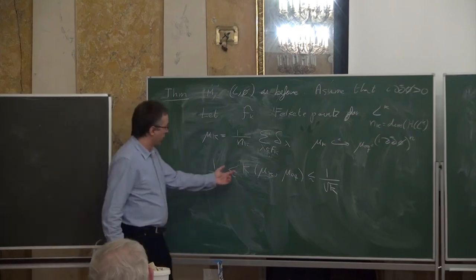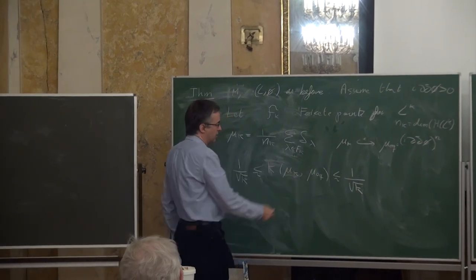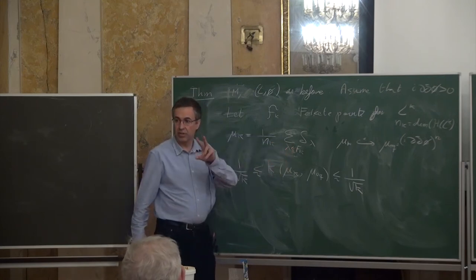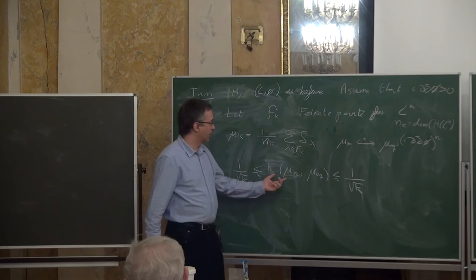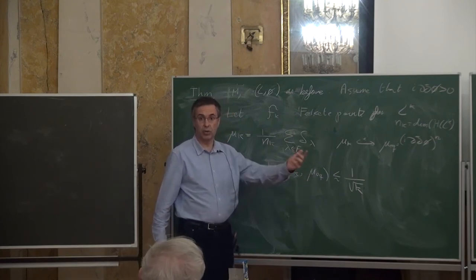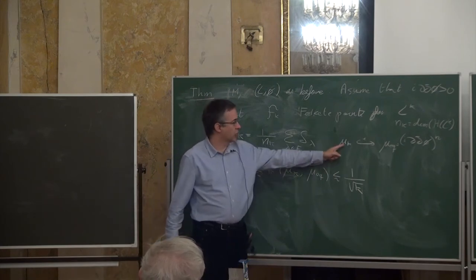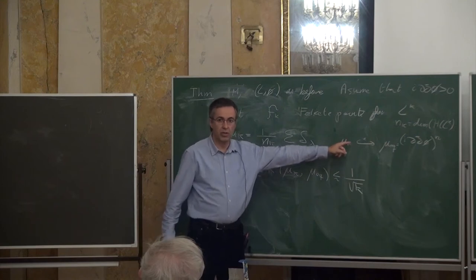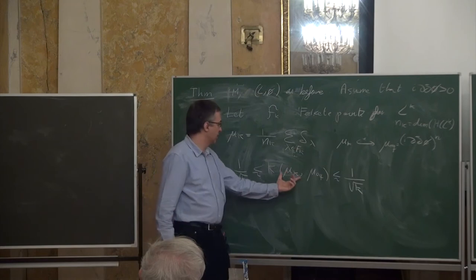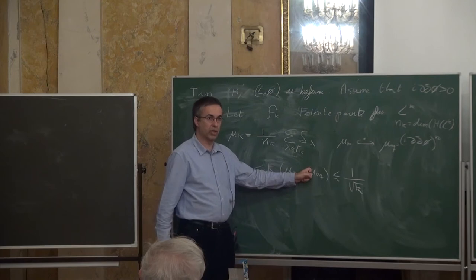The Kantorovich-Wasserstein distance metrizes the weak topology: a sequence of measures converges to the equilibrium measure weakly if and only if this distance goes to zero. But this statement says exactly at which speed the F_k points are converging to the equilibrium measure — they converge exactly at this rate.